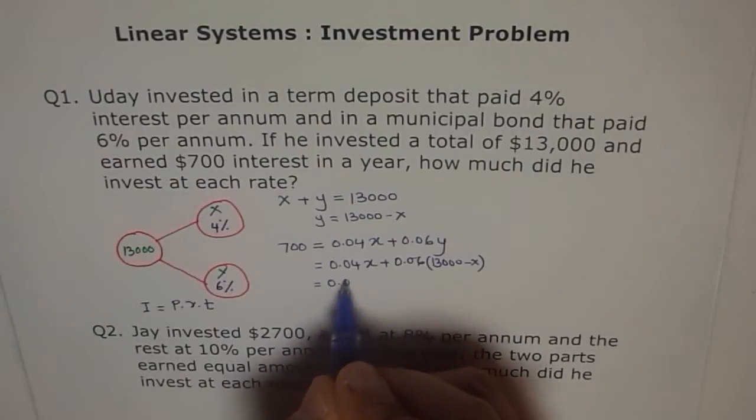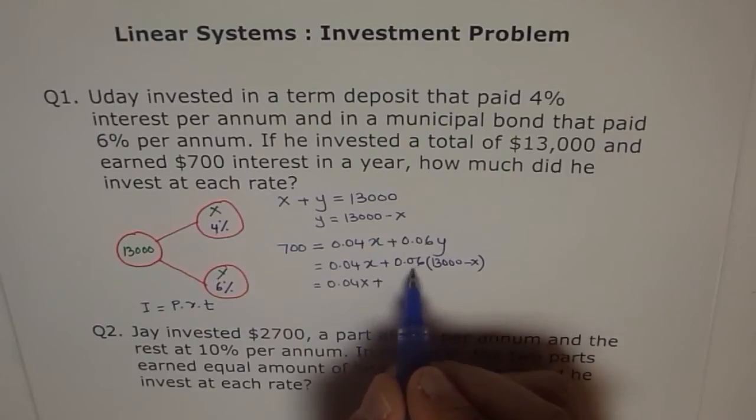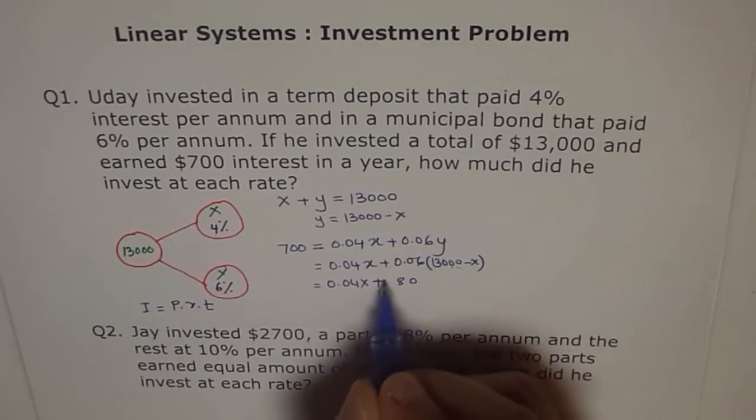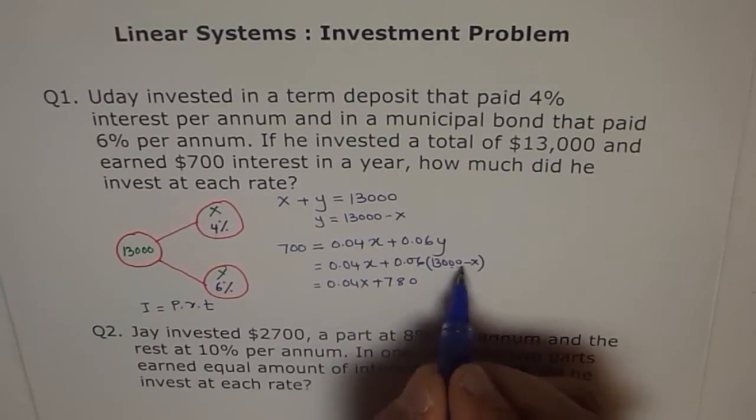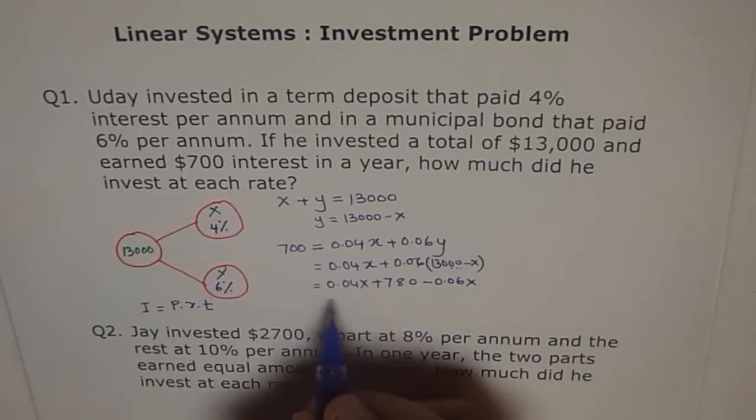We get 0.04X plus 13,000 times 6. So, we get rid of these two places. We are left to 130 times 6. So, 6 times 0, 0. 6 times 3, 18, 8. 1 there. 6 times 1, 6 and 1, 7. 7, 780. Minus 0.06X.